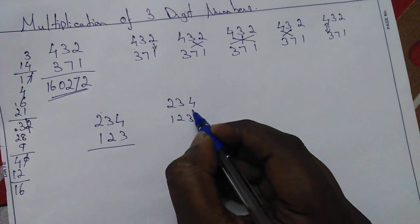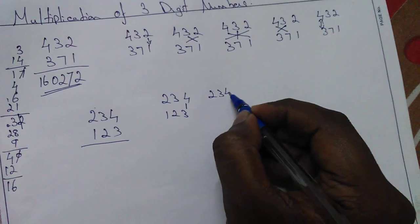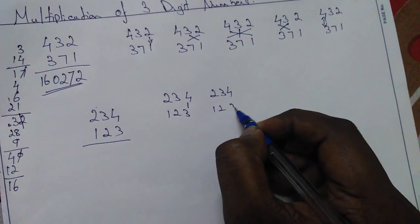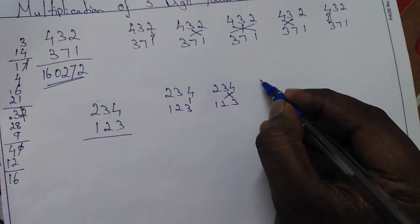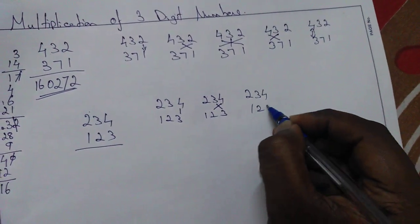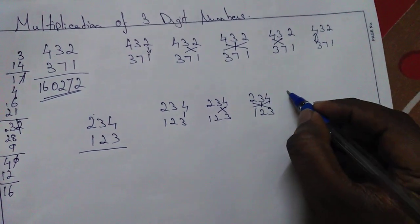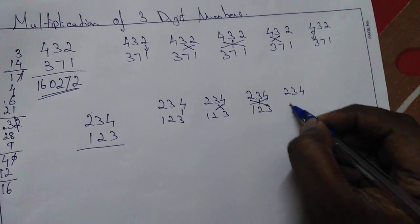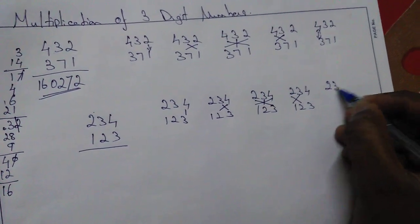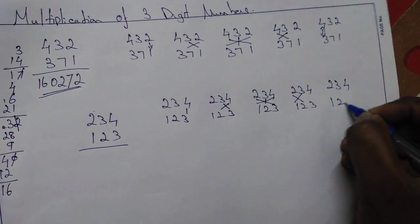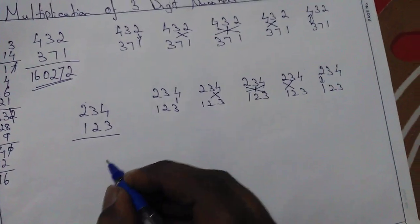First method is multiplying the ones. Second method is multiplying these. Third method, we need to multiply all. Fourth method, multiply both. Fifth method, we need to multiply this alone. Let's see.